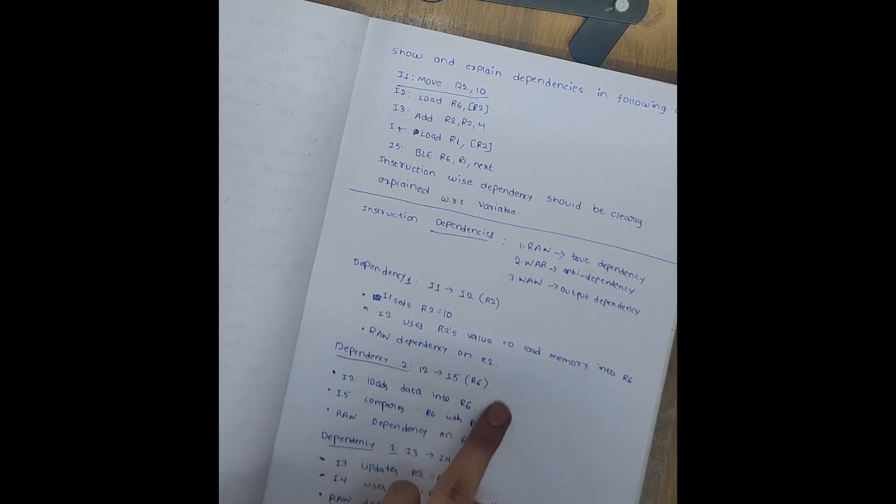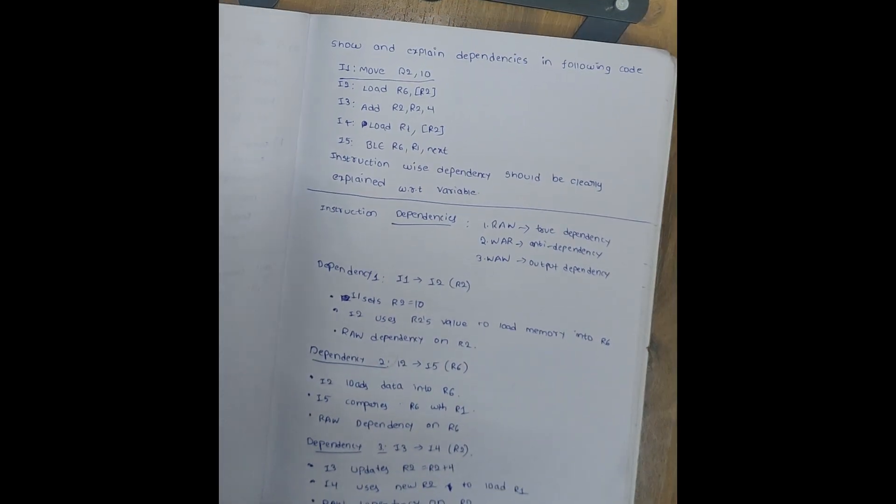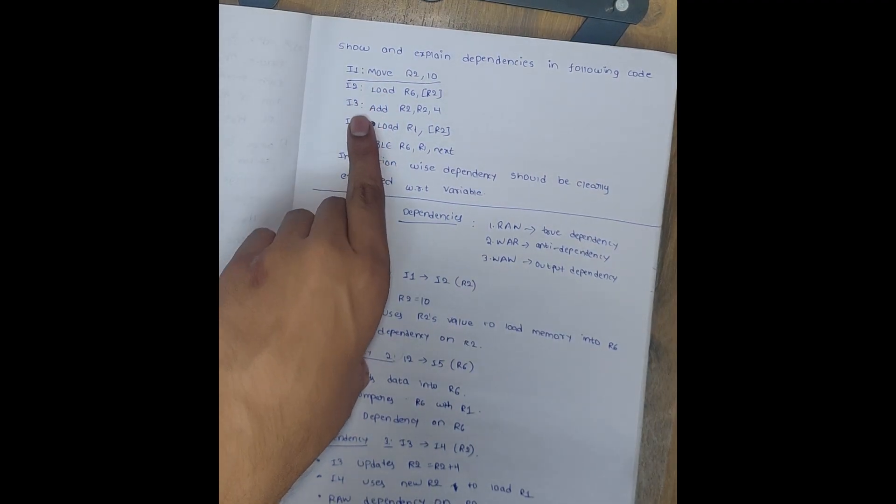So all the dependencies here are read after write, meaning each new step waits for the previous result. So in real life as well, if we compare, you will get first the address of the first house, then you will collect the parcel and move to the next house, collect the second parcel, and finally compare the two parcels.